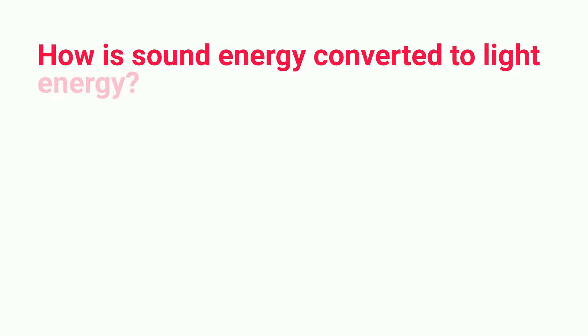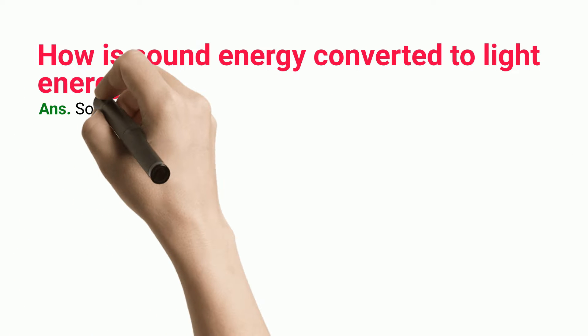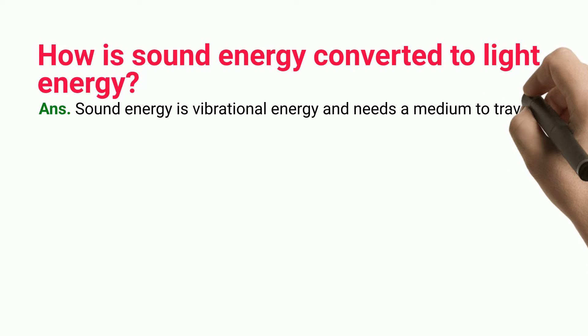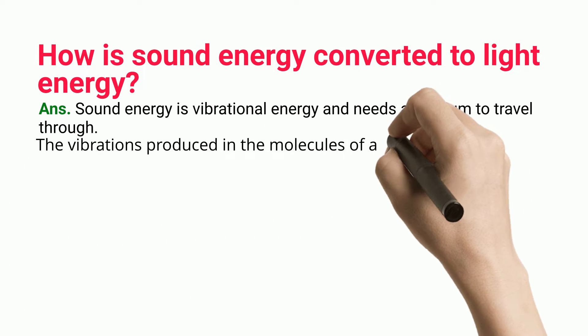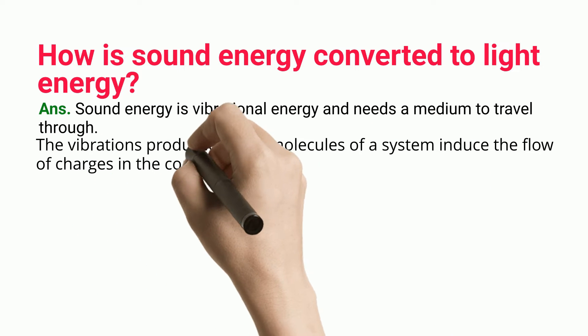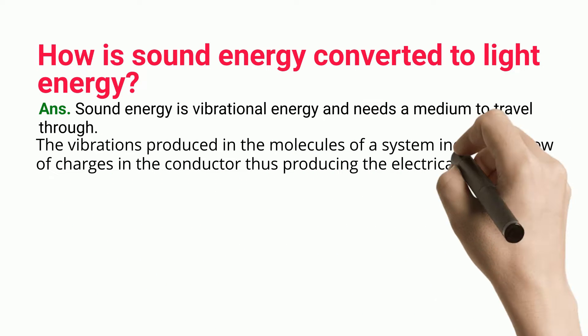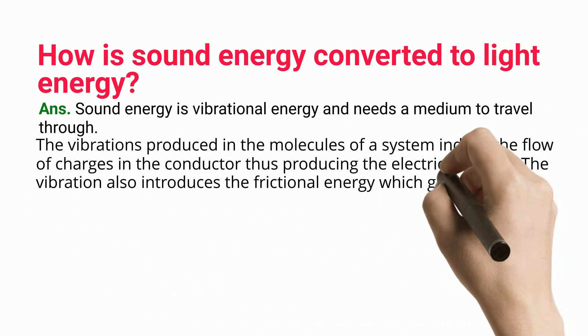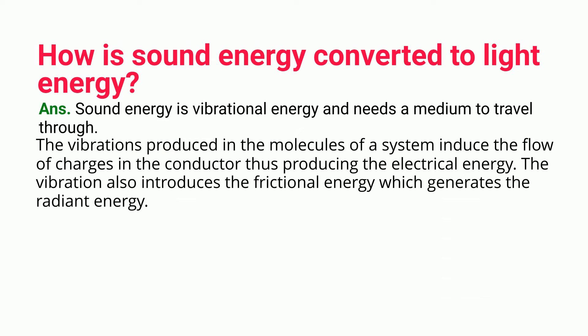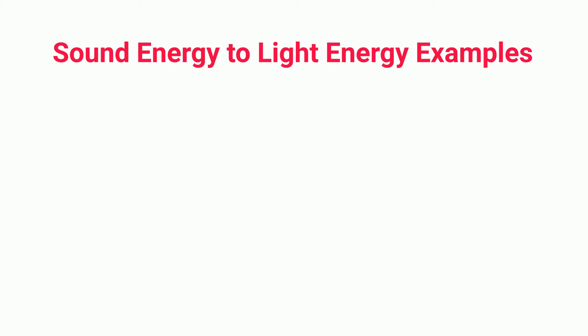How is sound energy converted to light energy? Sound energy is vibrational energy and needs a medium to travel through. The vibrations produced in the molecules of a system induce the flow of charges in the conductor, thus producing electrical energy. The vibration also introduces frictional energy which generates radiant energy.